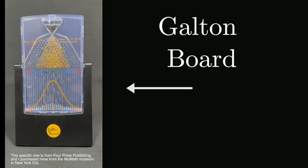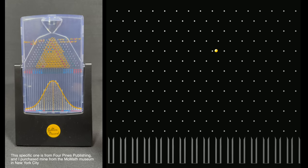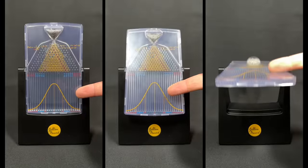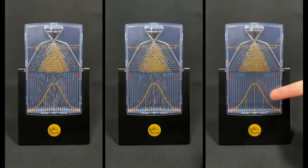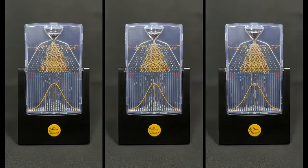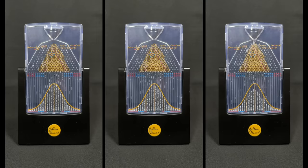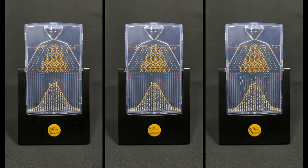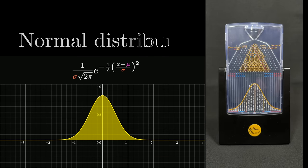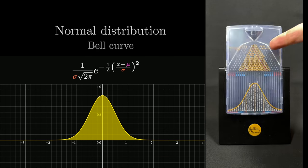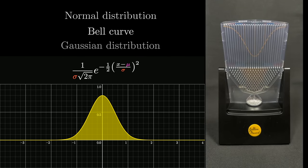This is a Galton board. Maybe you've seen one before — it's a popular demonstration of how even when a single event is chaotic and random, with an effectively unknowable outcome, it's still possible to make precise statements about a large number of events, namely how the relative proportions for many different outcomes are distributed. More specifically, the Galton board illustrates one of the most prominent distributions in all of probability, known as the normal distribution, more colloquially known as a bell curve and also called a Gaussian distribution.